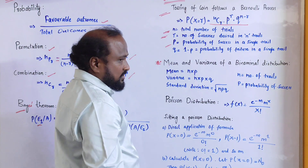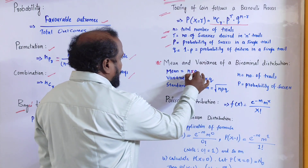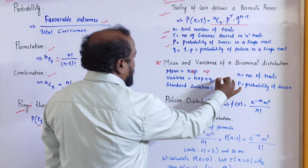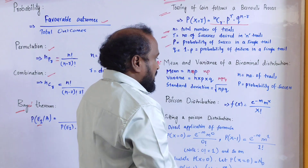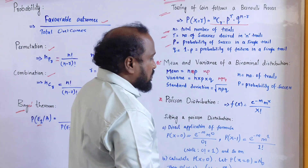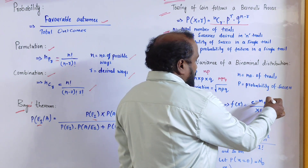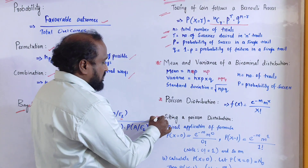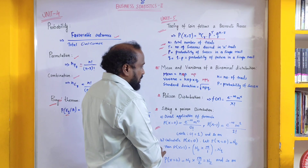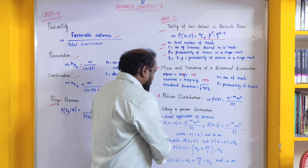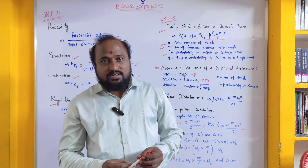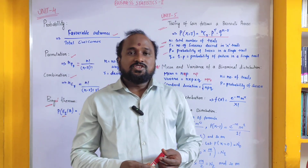Mean and variance of a binomial distribution — very important, will be asked for four marks. Mean equals N into P, that is NP. Variance equals N into P into Q, that is NPQ. Standard deviation equals root of NPQ. For the Poisson distribution: P(X) equals e to the power of minus M, into M to the power X, divided by X factorial. For fitting a Poisson distribution, after calculating the value of e to the power M, substitute in the formula. These are all the important formulas from every unit. Please stay tuned, watch and share my videos. Shaker signing off, bye.